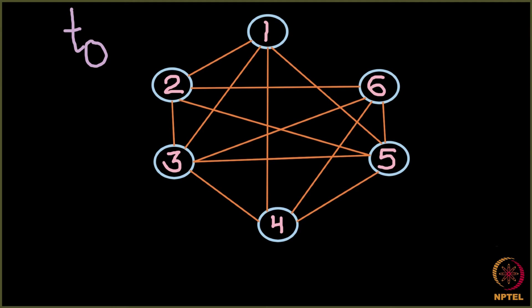At day 0, the network looks something like this. There are 6 nodes — 6 people — and the blue color represents susceptible. Currently each of these people is susceptible; none of them has acquired measles. The edges are the connections across which infection can transmit, and the probability of infection is the same across all edges, equal to P — that is the contagiousness value of the measles pathogen.